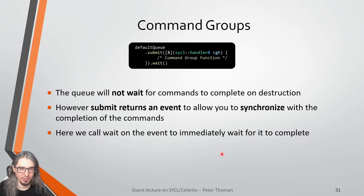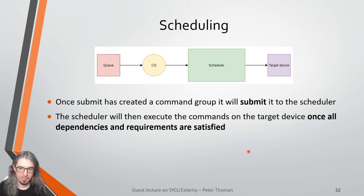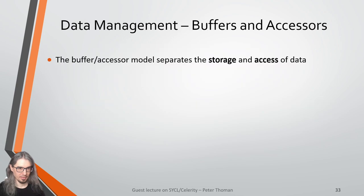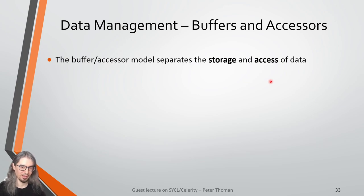Command groups are passed on to the scheduler, which is tasked with scheduling them on the target device. Before it does so, it makes sure that all dependencies and requirements are satisfied — primarily data requirements, at least in the buffer and accessor model of using SYCL. The buffer and accessor model separates the storage of data and access to data, providing a higher-level abstraction of both, which also gives the runtime system additional information used in scheduling.